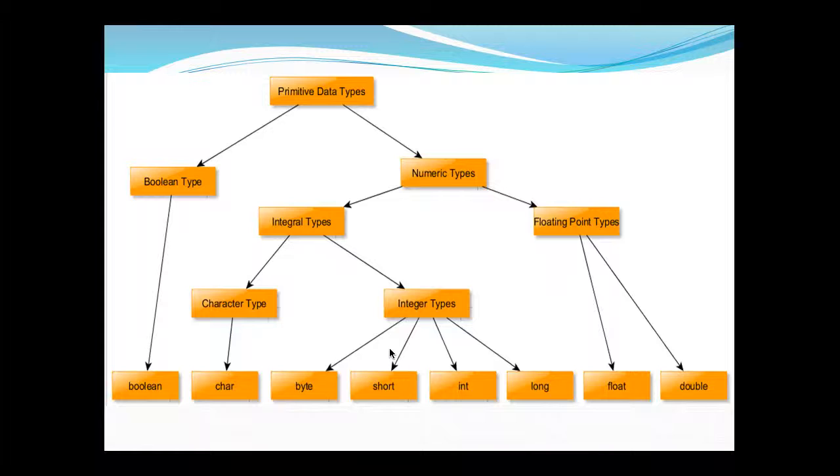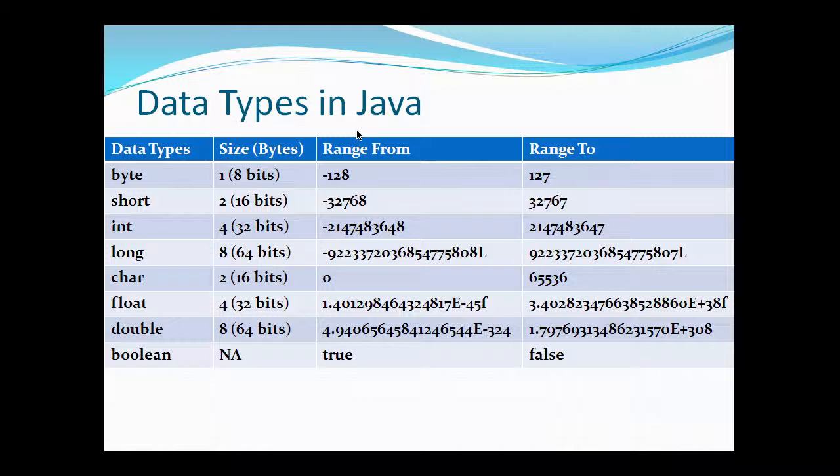If we move further, if you talk about floating point types, there are two data types: float and double. If you look into this slide, you will see that there are eight data types which are byte, short, int, long, char, float, double, and boolean.